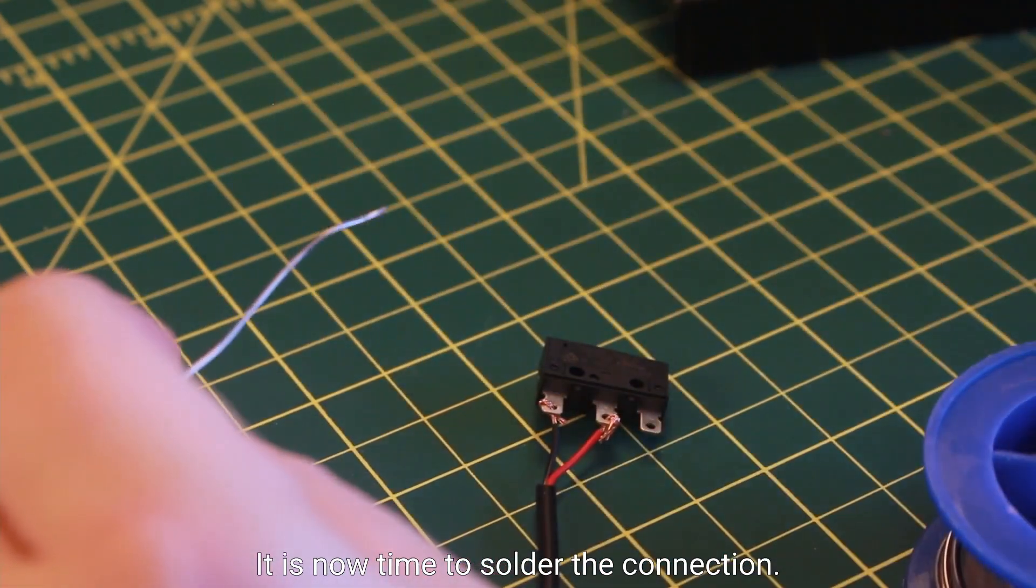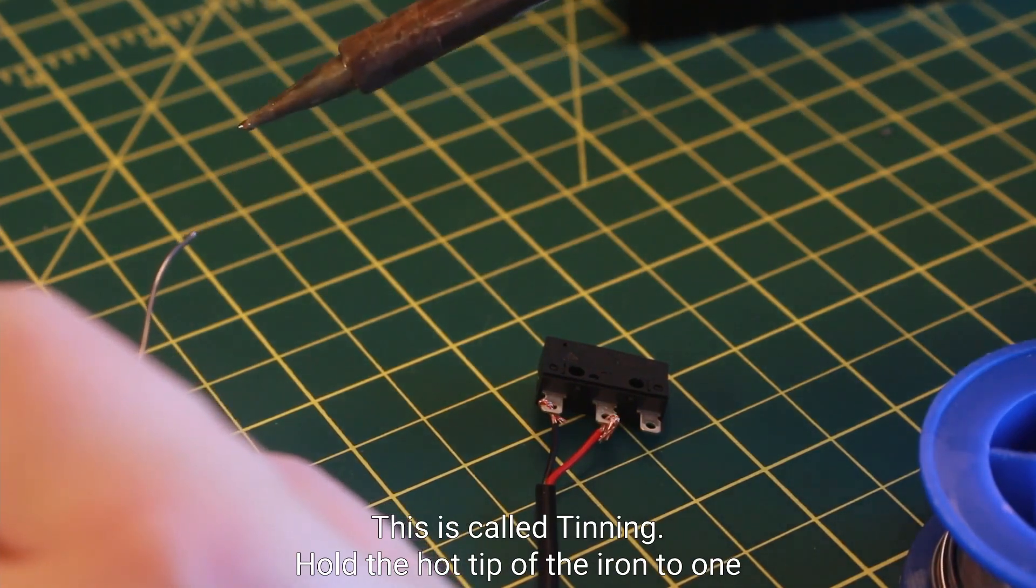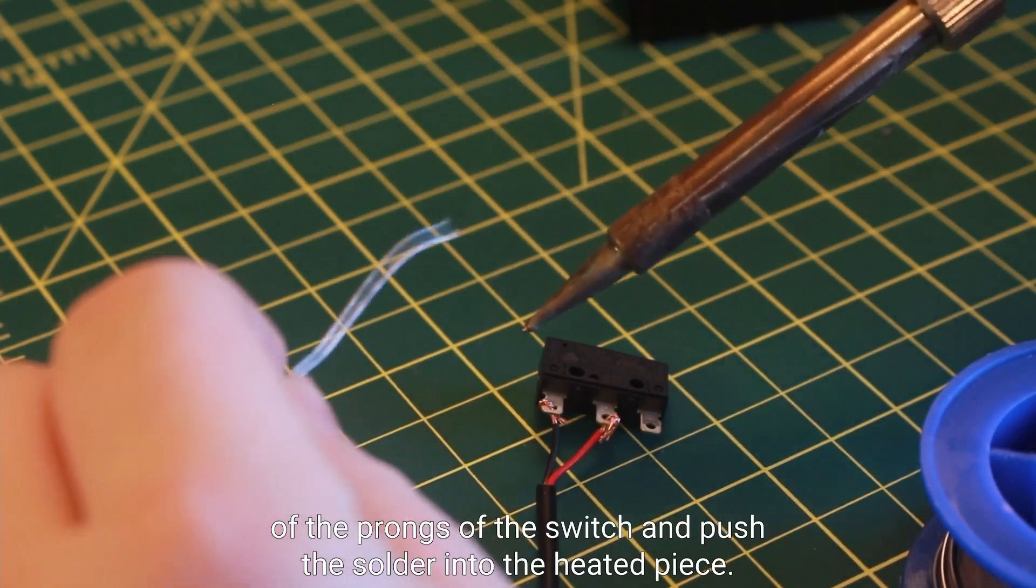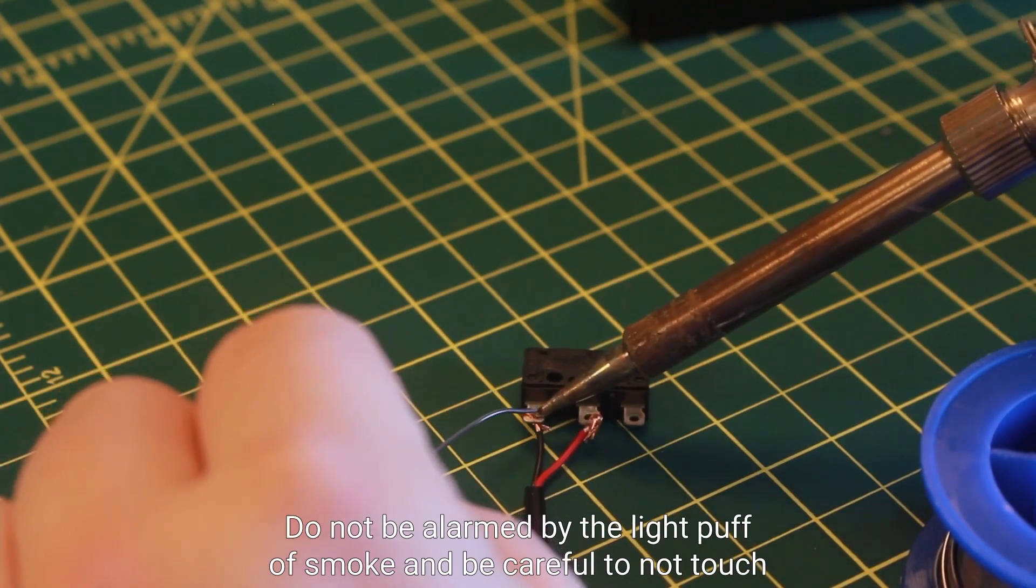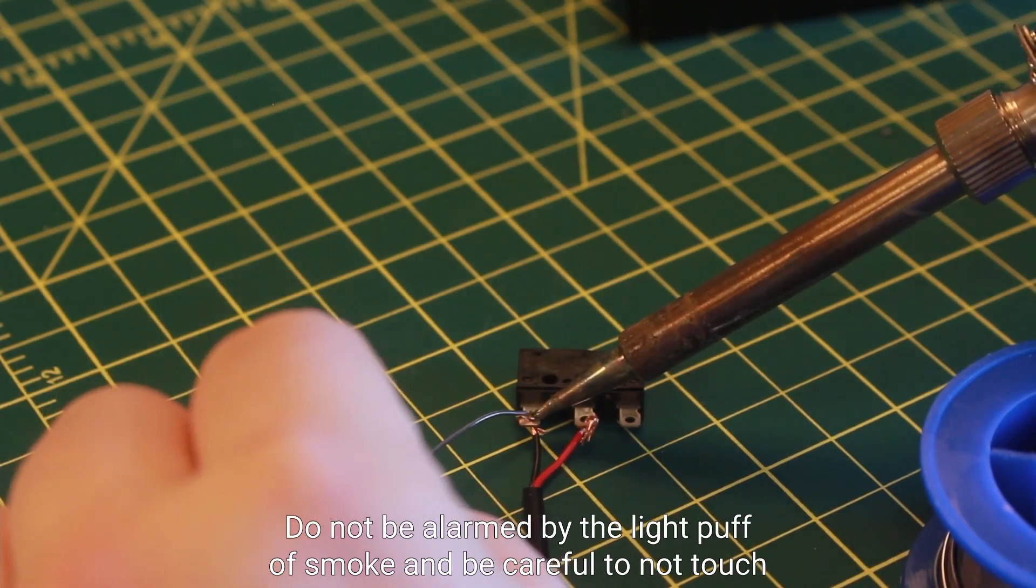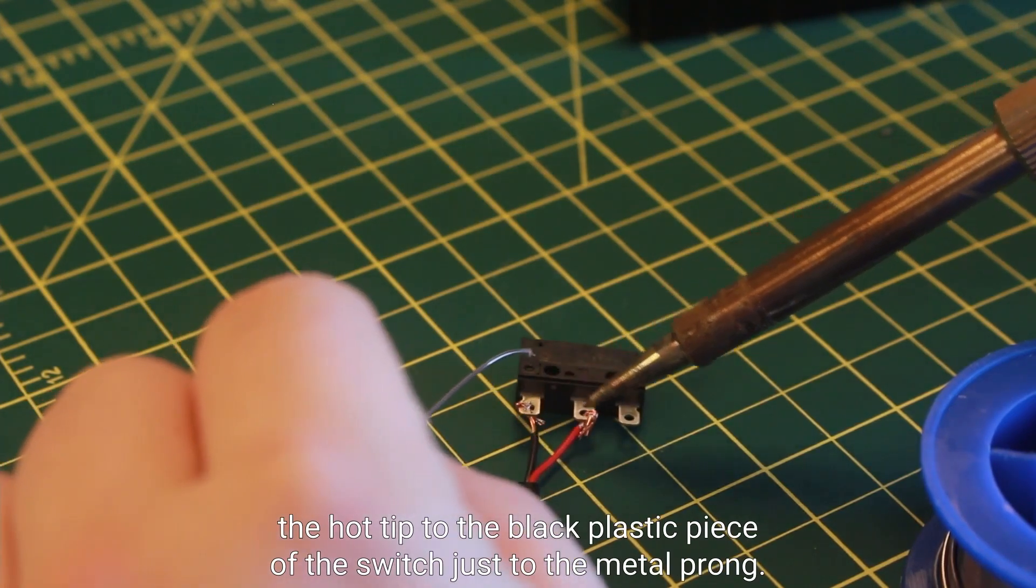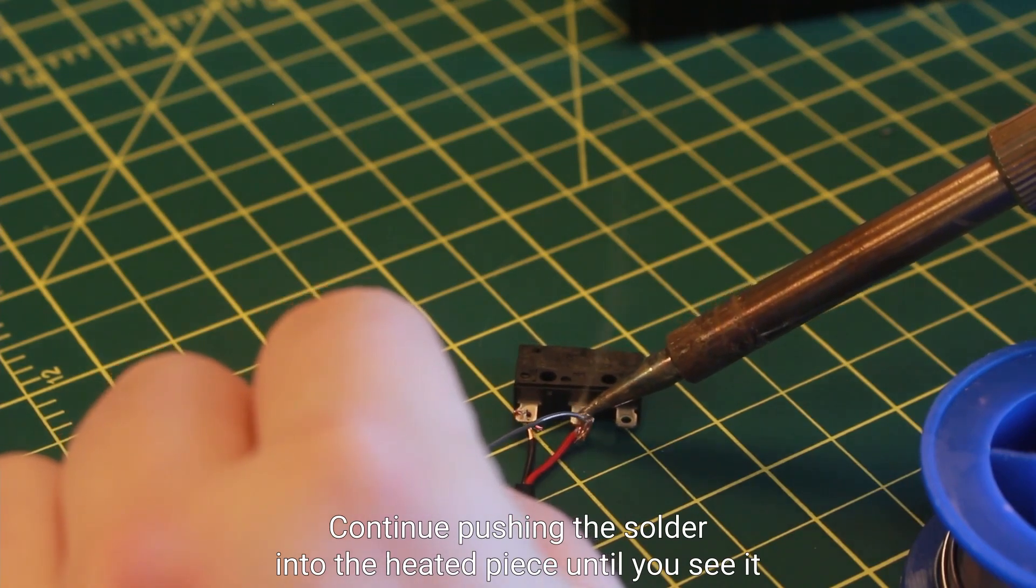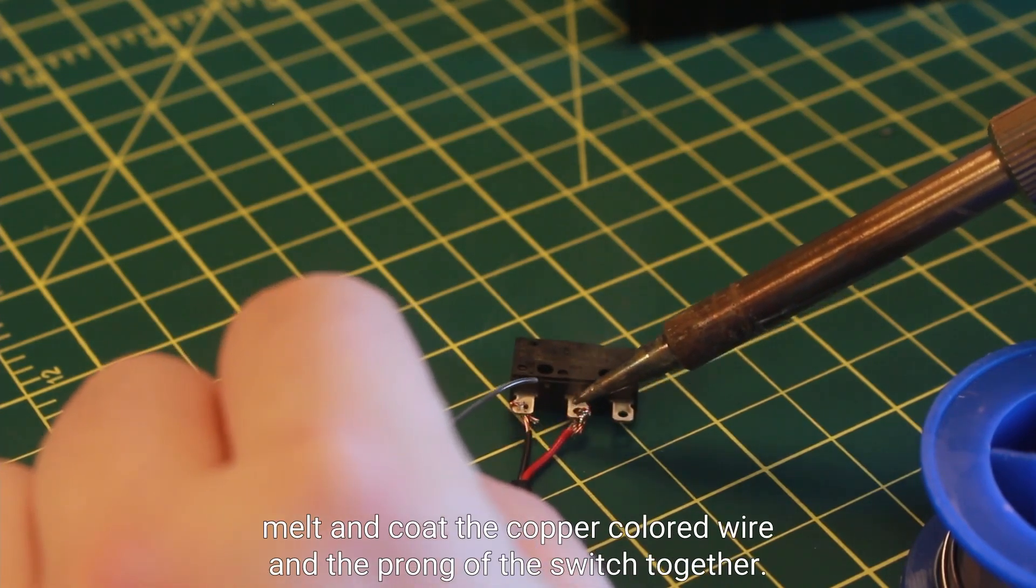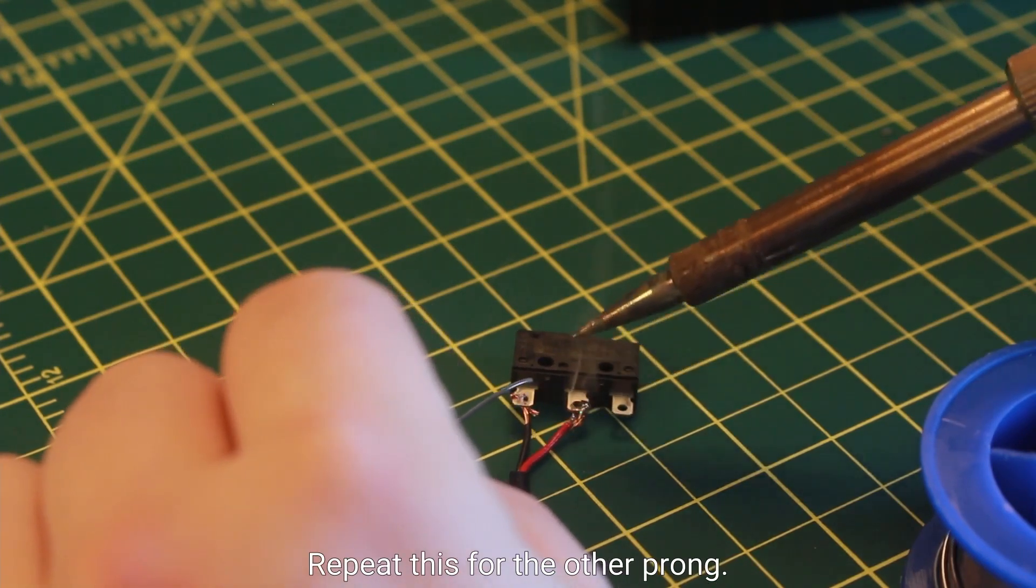It is now time to solder the connection. First take your solder and touch the tip of the iron to it briefly. This is called tinning. Hold the hot tip of the iron to one of the prongs of the switch and push the solder into the heated piece. Do not be alarmed by the light puff of smoke and be careful to not touch the hot tip to the black plastic piece of the switch, just to the metal prong. Continue pushing the solder into the heated piece until you see it melt and coat the copper colored wire and the prong of the switch together. Repeat this for the other prong.